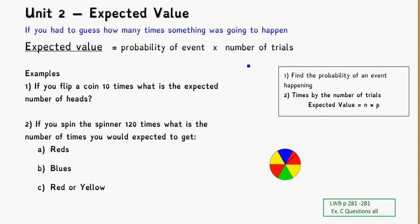Expected value is basically like if we had to guess how many times something was going to happen - what we'd expect to see, how many times we'll expect it to happen. Our formula for it is the probability of the event times the number of trials that we're going to look at.